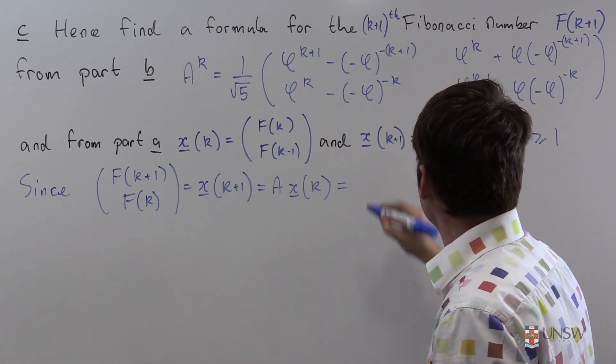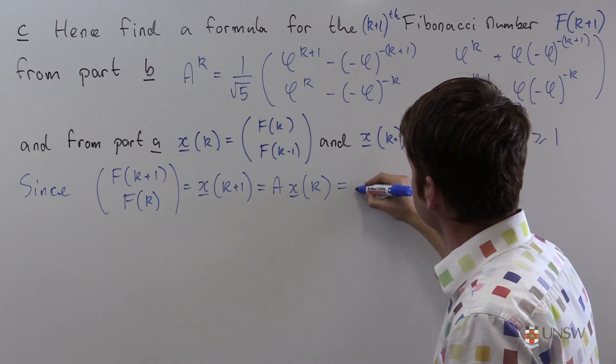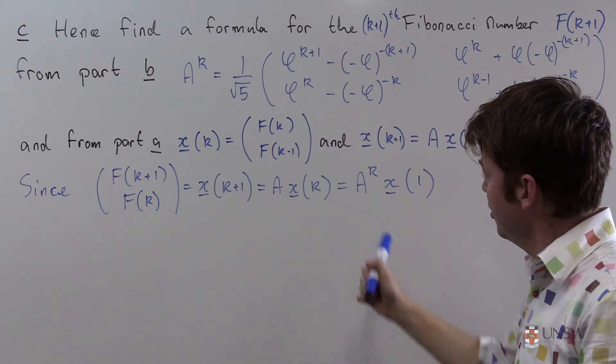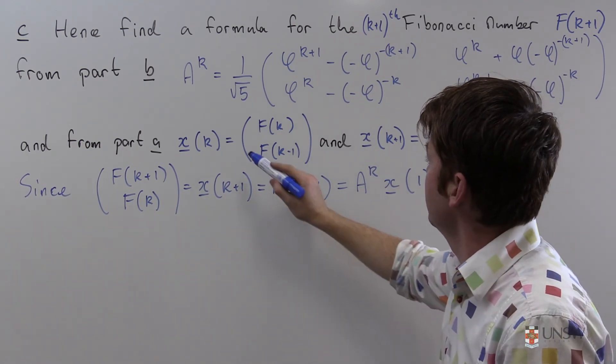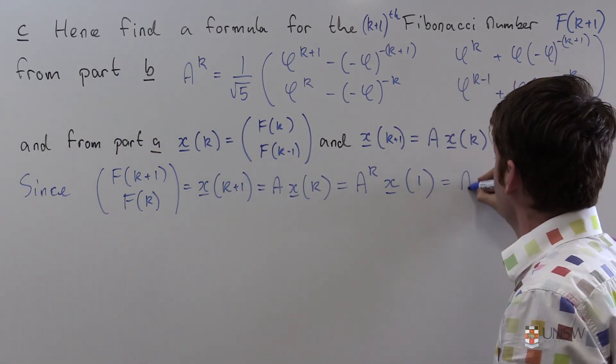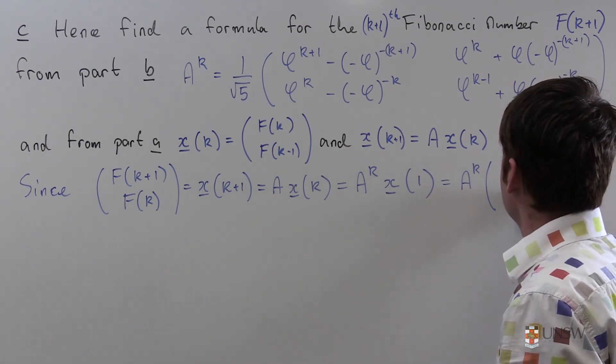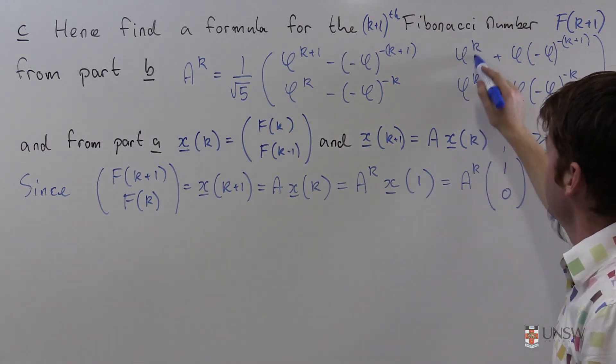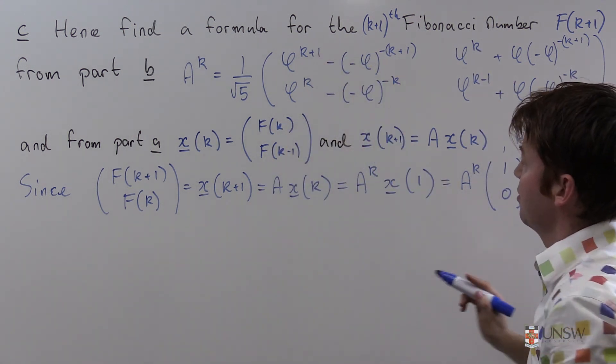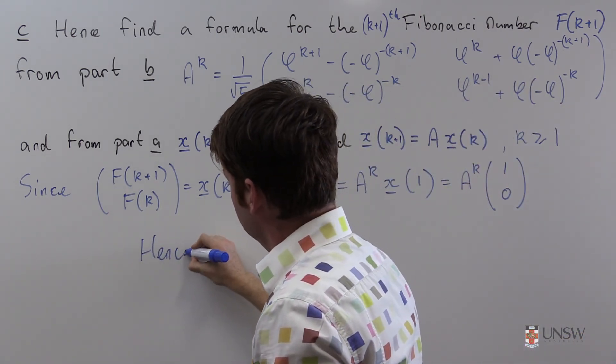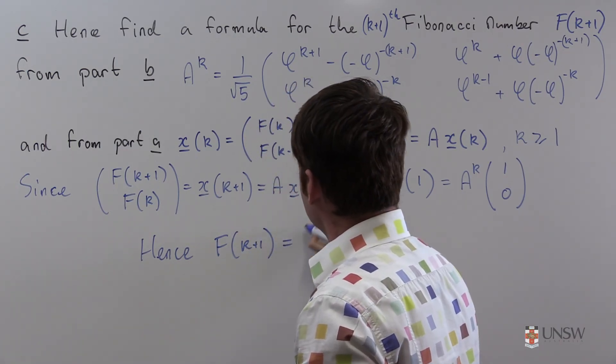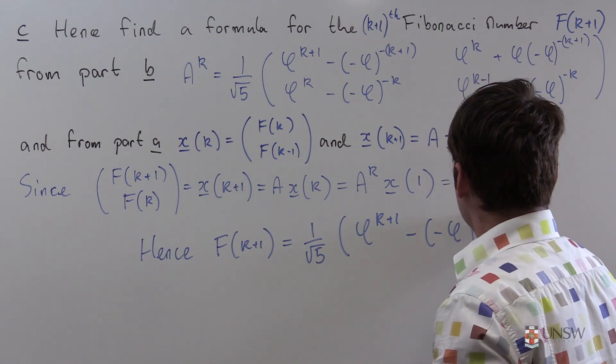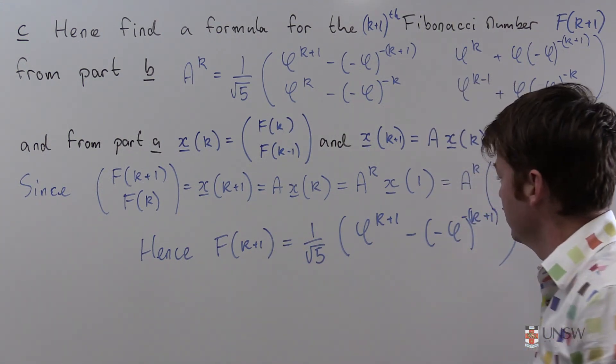So I can reapply my recurrence relation all the way down until k equals 1. So that's A^k times x_1. So I know what A^k is, and x_1, well that's just the 1st and the 0th Fibonacci numbers. So that's A^k times [1, 0]. And so the (k+1)th entry is just this matrix times by the vector [1, 0], which gives me that entry right there. Hence, f_(k+1) is equal to 1/√5 times [φ^(k+1) - (-φ)^(-k-1)]. Behold, the (k+1)th Fibonacci number as a fixed formula of k.